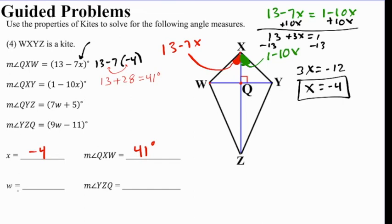Now to solve for the next variable, w, we see 7w plus 5 goes in place of angle QYZ. QYZ is this angle here I'm coloring in. And then angle YZQ is this angle down here that I'm coloring in. And because this angle where the two diagonals meet is 90, that means that these two angles must also add up to 90, since there's 180 degrees in a triangle. So now we know that 7w plus 5 plus 9w minus 11 equal 90 degrees.